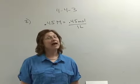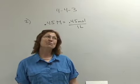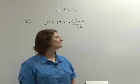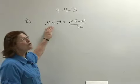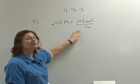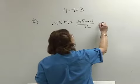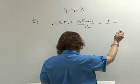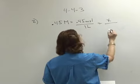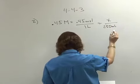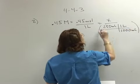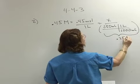Number two is asking how I would prepare a solution. When it asks how would I prepare, I have to find the mass that I'm going to weigh out to put into a volumetric flask. I'm given a concentration and it's very important to write out what it means. This means that I have 0.45 moles for every one liter.